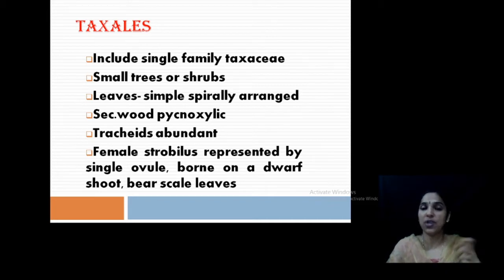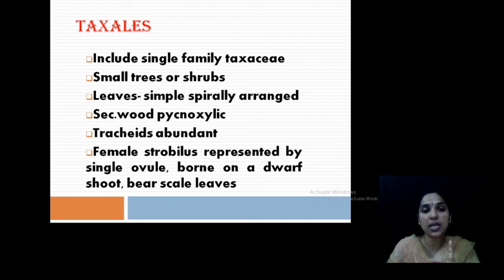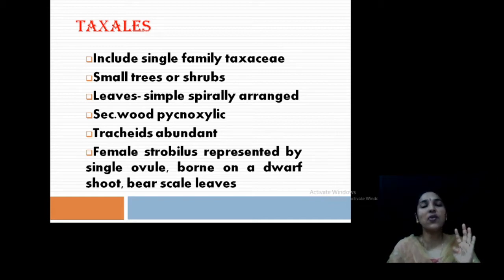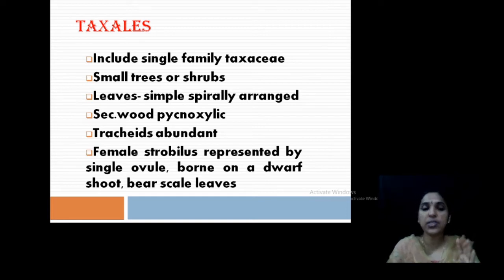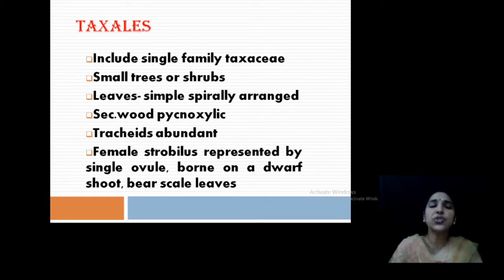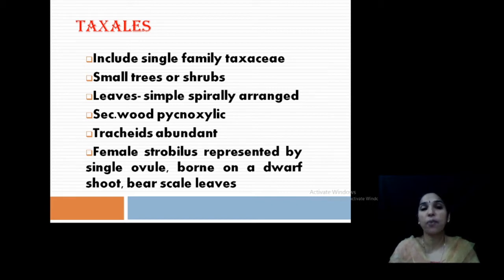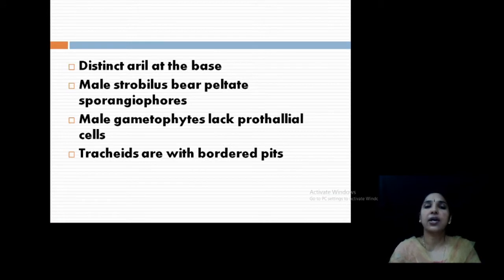Secondary wood is very prominent with the tracheids. A very important feature is that the female strobilus is represented by a single ovule, born on the dwarf shoots, while the male has the strobilus nature. This is a very peculiar order having some different characters from our normal gymnosperms.